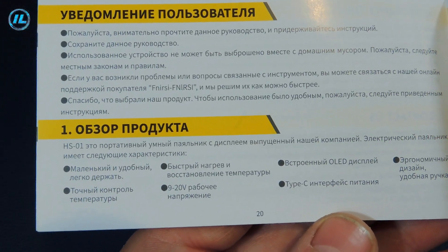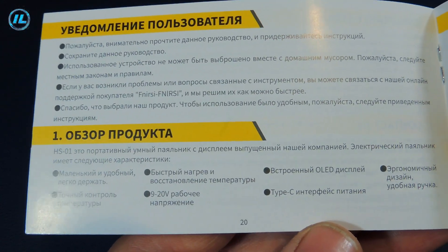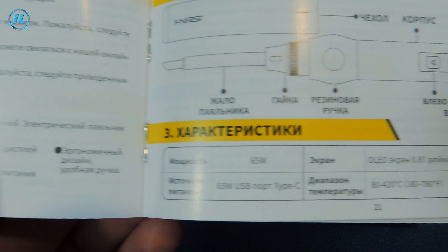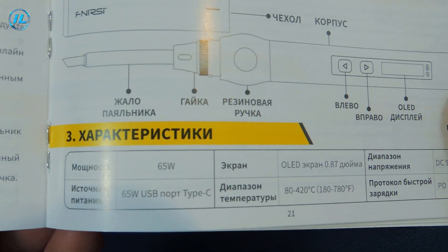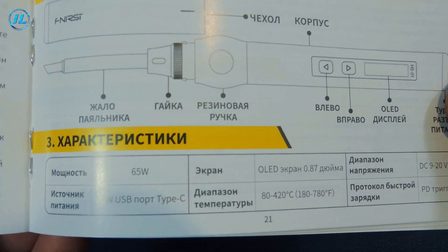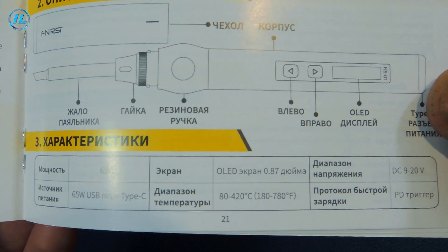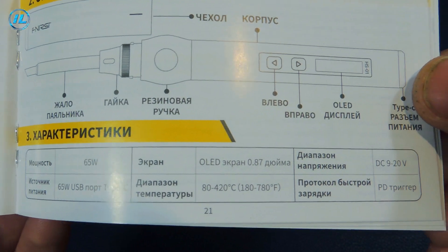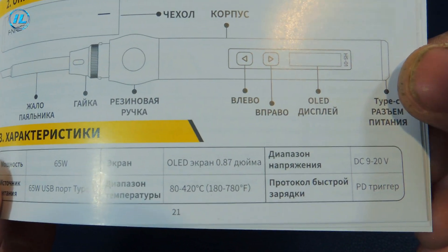In this manual you can find the full description and characteristics of this soldering iron. For example, precise temperature control, operating voltage from 9 to 20 volts, power interface type C, maximum power of 65 watts, temperature range from 80 to 420 degrees Celsius, and fast charging protocol power delivery.